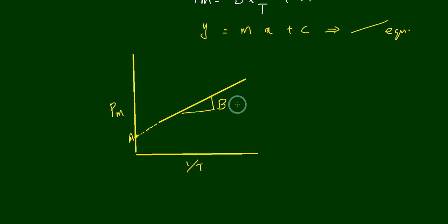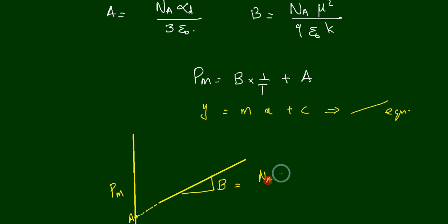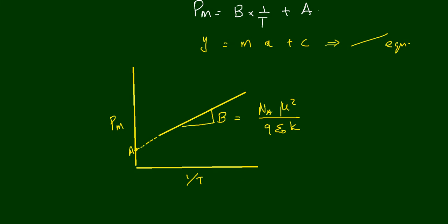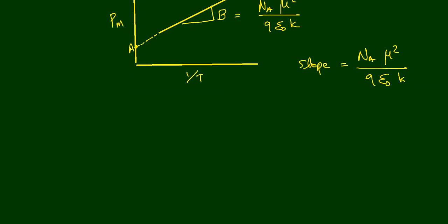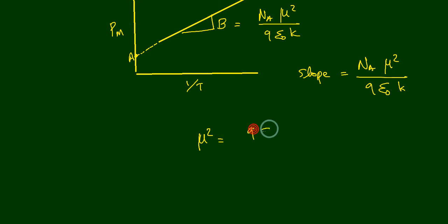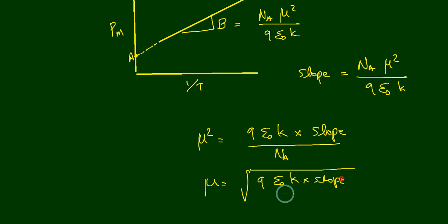We are particularly interested in the slope b, because b equals Na·μ² divided by 9ε₀k. That is an important parameter because from it we can find μ². So the slope of the Pm versus 1/T graph equals Na·μ² divided by 9ε₀k. Therefore, μ² equals 9ε₀k times slope divided by Na, and μ equals the square root of (9ε₀k times slope divided by Na).